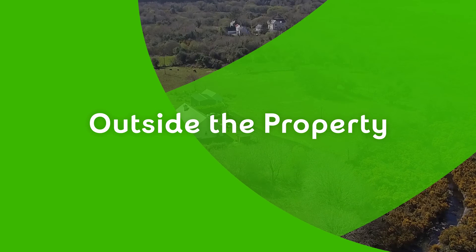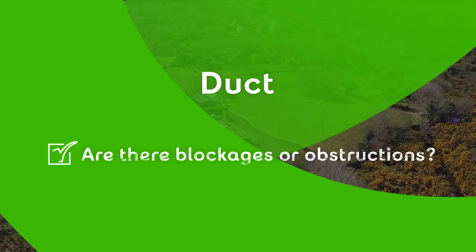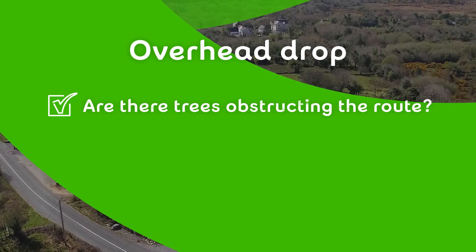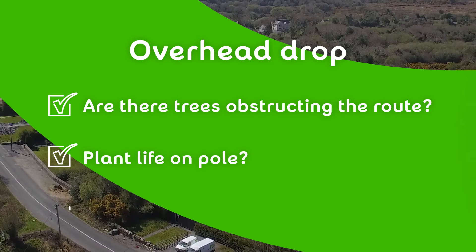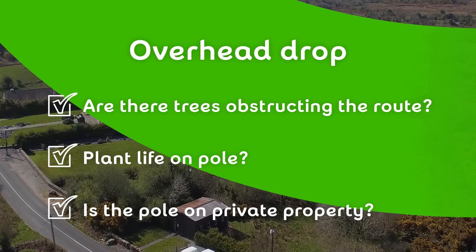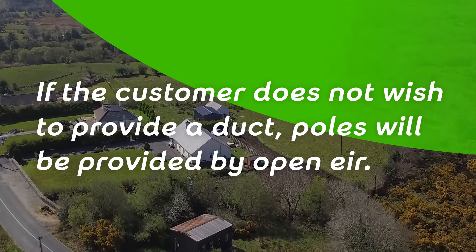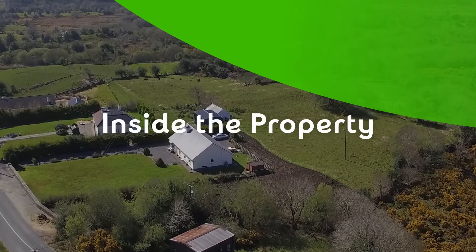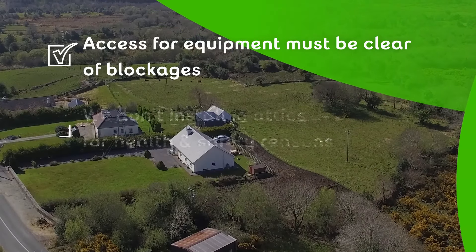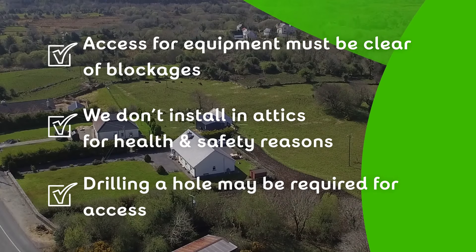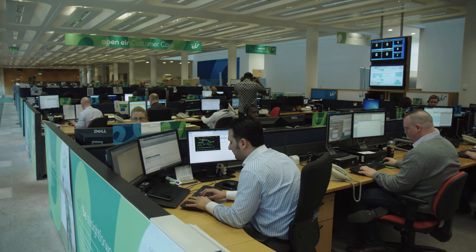To recap — outside the property: if a duct is available, check for blockages or obstructions; if an overhead drop is required, check for trees obstructing the route, plant life on the pole, or if the pole is on private property. If the customer does not wish to provide a duct, poles will be provided by OpenAir. Inside the property: access for equipment must be clear of blockages, we don't install in attics, and drilling a hole may be required for access. Our job in customer service is to help explain the process clearly and make the installation a positive experience.